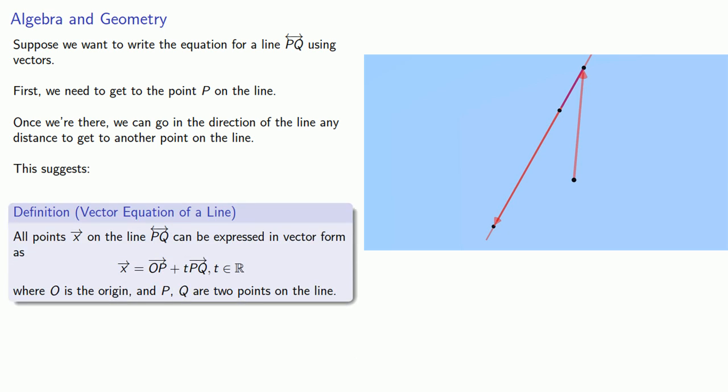All points x on the line PQ can be expressed as vector OP, getting from the origin to the point, plus T times vector PQ, following the line some arbitrary distance.